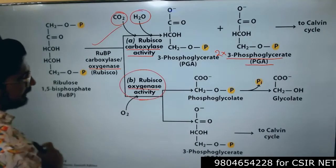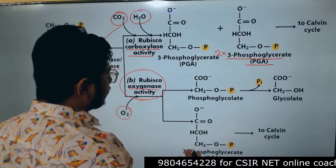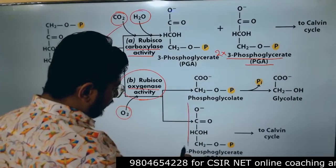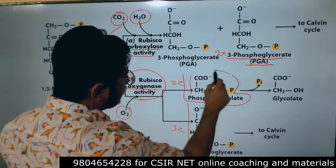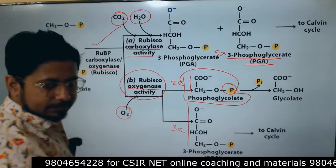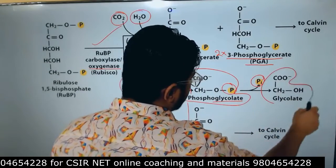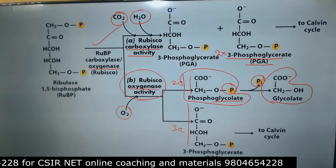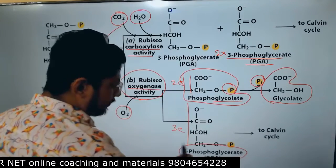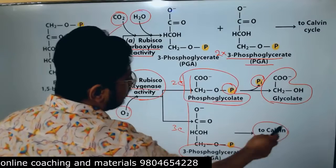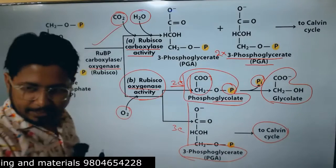If Rubisco's oxygenase activity is triggered, oxygen is attached instead. Since no extra carbon is added to the five-carbon substrate, the split yields a three-carbon molecule and a two-carbon molecule. This two-carbon molecule is known as phosphoglycolate. When the phosphate is cleaved off, it becomes glycolate (with a COO group and CH2OH), and one molecule of 3-phosphoglycerate is also produced.